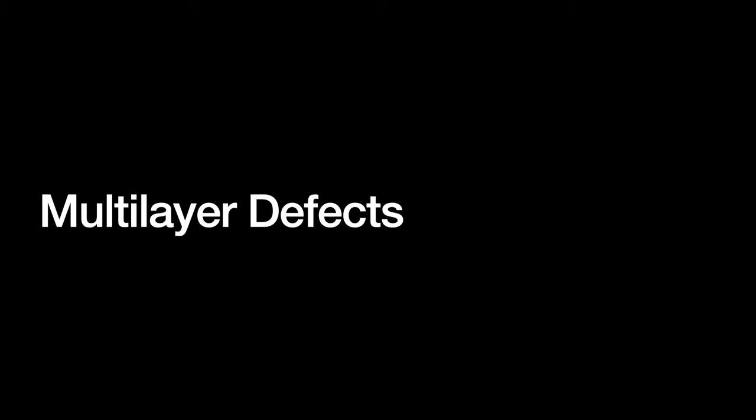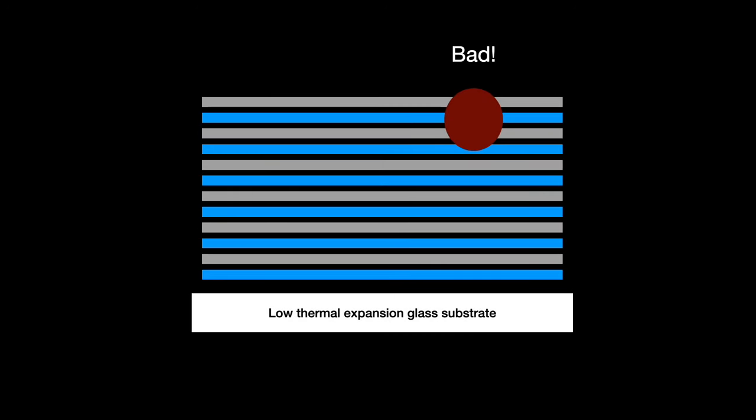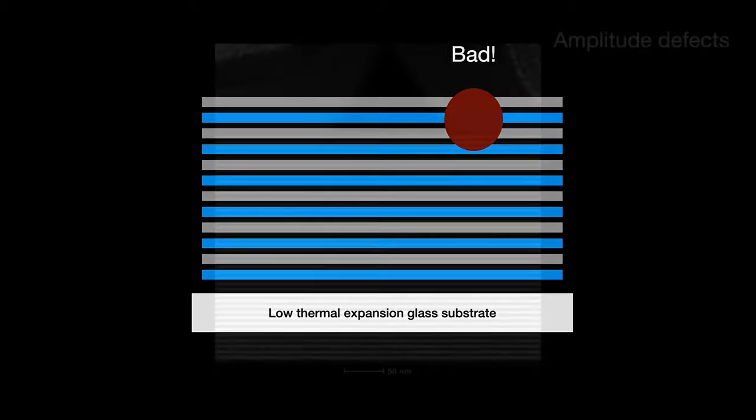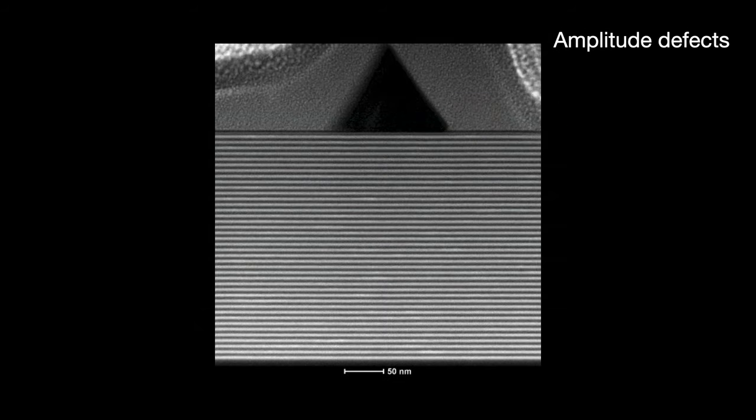Multilayer defects relate to the mirror layer and how it reflects EUV light. There are two subcategories of multilayer defects: amplitude defects and phase defects. Amplitude defects are particles or pits on or near the mirror layer's surface. These can be created during any of the mask cleaning or polishing steps. During the exposure step, amplitude defects absorb EUV light, causing contrast issues between itself and the surrounding mirror areas.